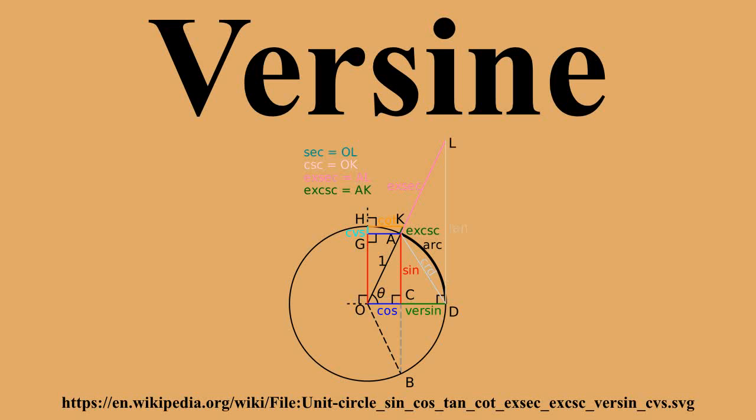Another historical advantage of the versine is that it is always non-negative, so its logarithm is defined everywhere except for the single angle where it is 0.